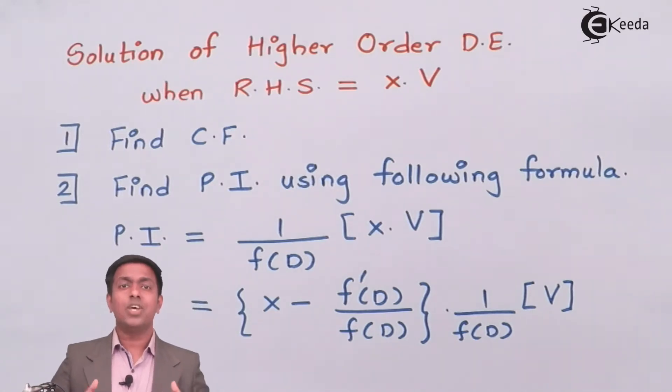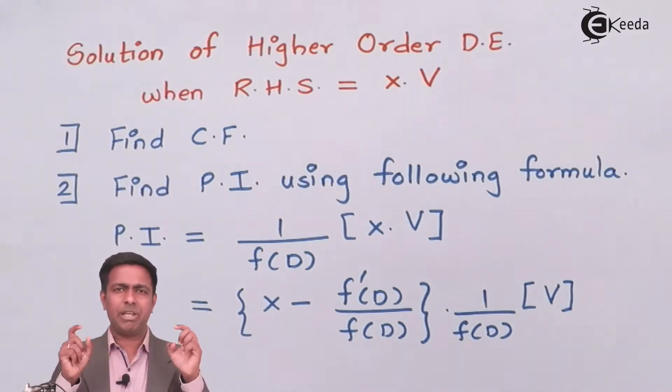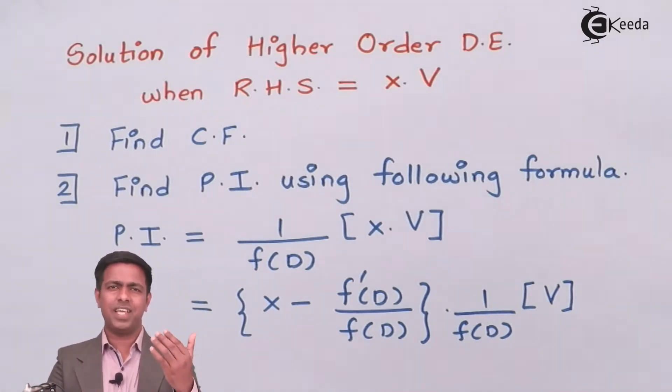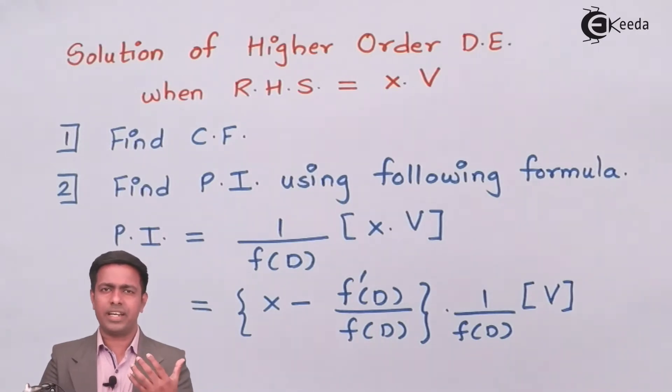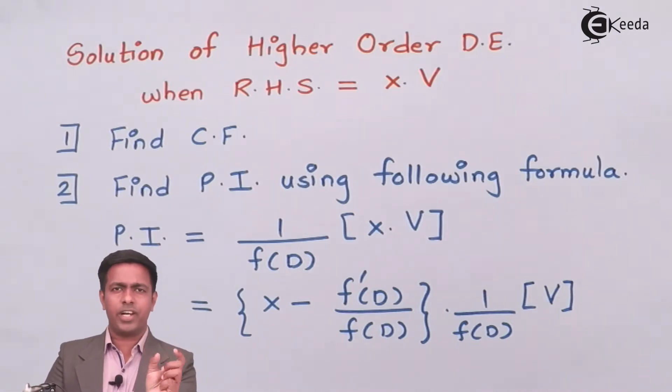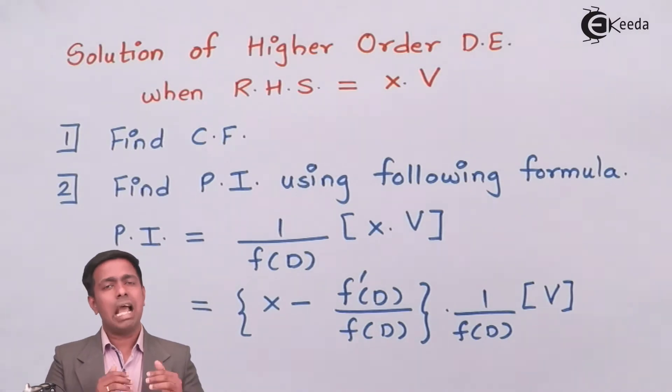Step number one is we have to find out the complementary function. To get the complementary function, we have to convert the given differential equation in form of operator d, where d is d/dx. Once you convert it in terms of operator d, you can get a function of d. From that function of d, equate it to 0 and you can get the auxiliary equation. Solving the auxiliary equation, you get the roots and from there you can get the complementary function.